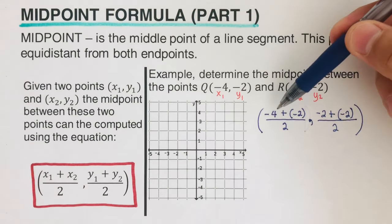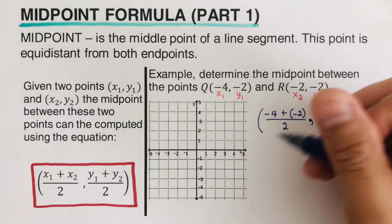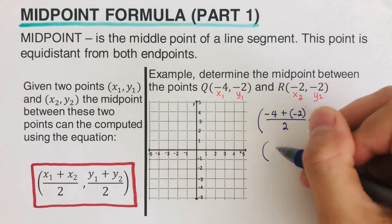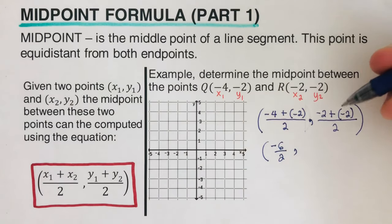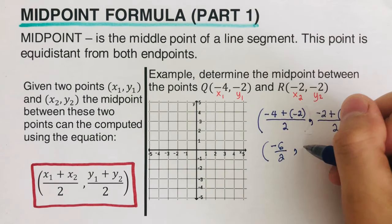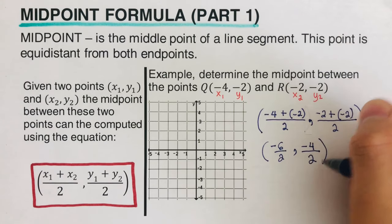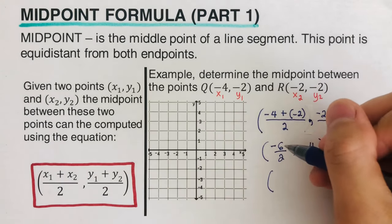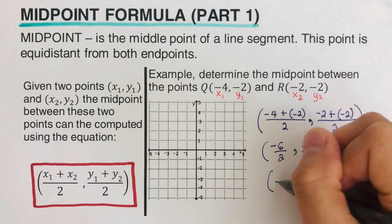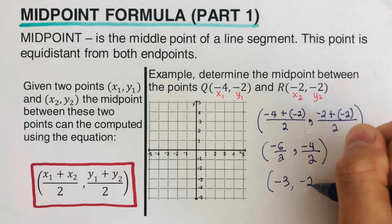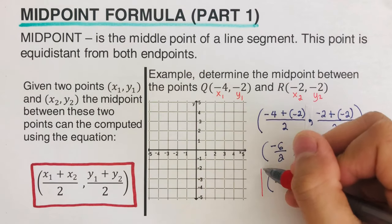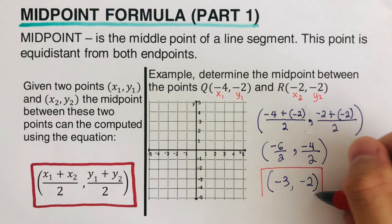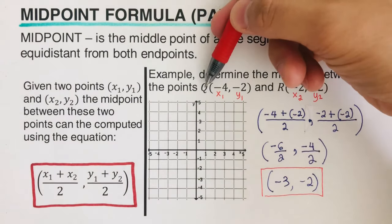From here we simplify: -4 plus -2 equals -6, and that is over 2. Then -2 plus -2 is -4, and that is over 2. Simplifying gives us (-3, -2). So this is the midpoint of the two points Q and R.